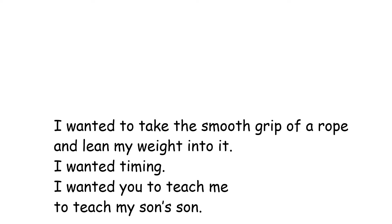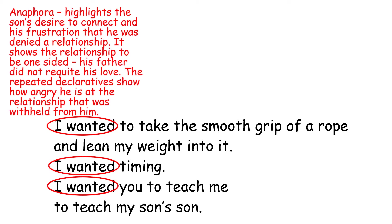As soon as you read this stanza, you probably noticed the repeated beginnings of these lines: 'I wanted, I wanted, I wanted.' The technique being used here by the poet is anaphora. That repeating of the phrase 'I wanted' could show the son's desire to connect and his frustration that he was denied a relationship. It may show the relationship to be one-sided — how he was constantly trying to have a relationship with his father, and yet his father remained closed off. Perhaps his father did not require this level of effort or love. These repeated declaratives show how angry he is at the relationship that was withheld from him. Considering the use of anaphora here is definitely worth our time.